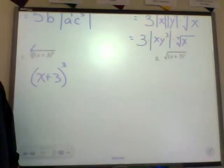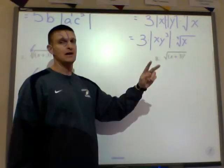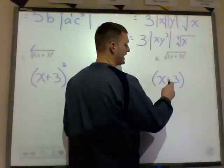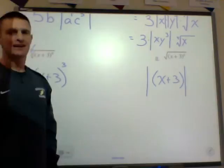Number eight: the square root of x plus 3 squared. This is an even index, so I must keep absolute values in mind. I have two of those x plus 3 quantities inside, and I can factor one out. Since I'm pulling out a single one, I must put it inside absolute values. The answer is the absolute value of the quantity x plus 3.